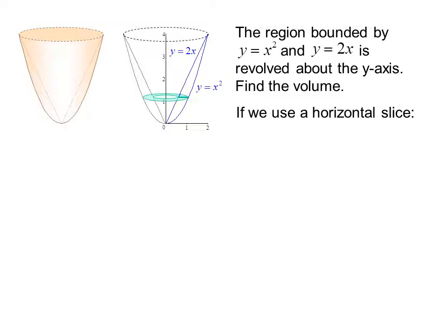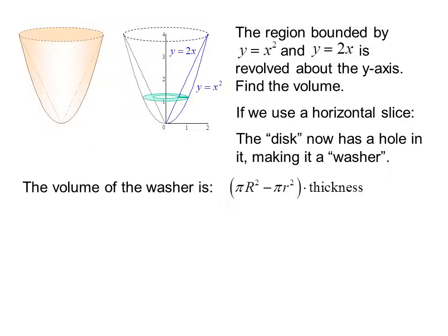If we use a horizontal slice, the disk now has a hole in it, making it a washer. The volume of the washer is pi times the outer radius squared minus pi times the inner radius squared times the thickness. So what we're doing is we're starting with the area of the circle, which is pi r squared, and we're subtracting the area of the hole, which is pi times little r squared. We can factor out the pi, and the thickness is dy.